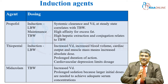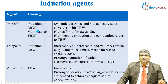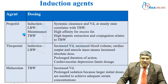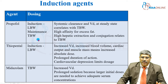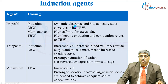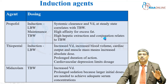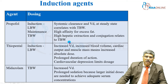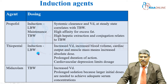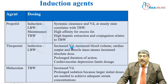Coming to induction agents — propofol: induce based on lean body weight; if using as an infusion, use total body weight. The systemic clearance and volume of distribution at steady state correlate with total body weight. It has high affinity for excess fat and high hepatic extraction and conjugation related to total body weight. For thiopentone, use lean body weight; there is increased volume of distribution, increased blood volume, cardiac output, and muscle mass requiring an increased absolute dose.